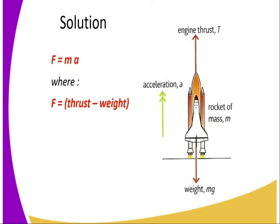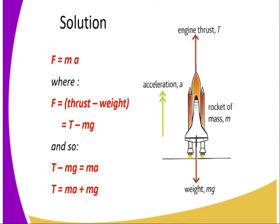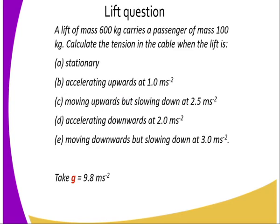So the thrust T minus Mg. We should remember that the thrust minus the weight of the rocket is equivalent to MA. So by equating the two and making T the subject of the formula, we can determine the thrust of the engine.